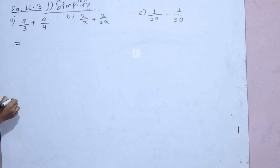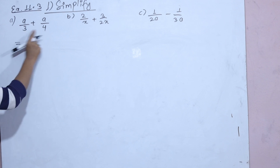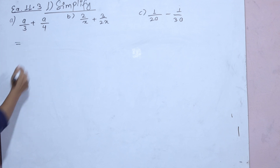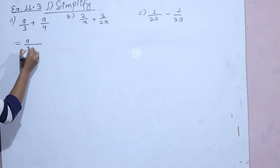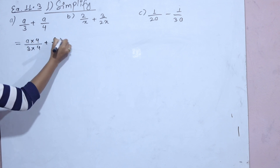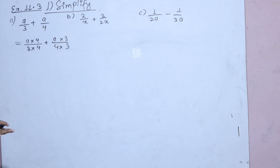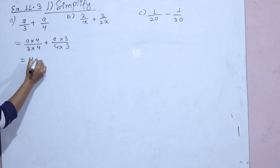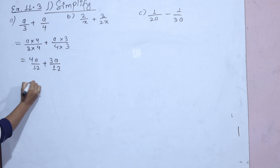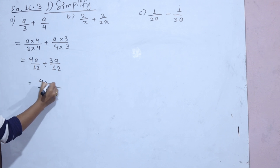You can add the fractions by making the denominators the same. For 3 and 4, multiply: 3 will become 4 and 4 will become 3. So you get 4a by 12 plus 3a by 12, and now the denominator is the same. You can add 4a plus 3a.